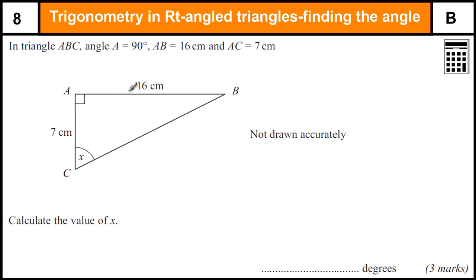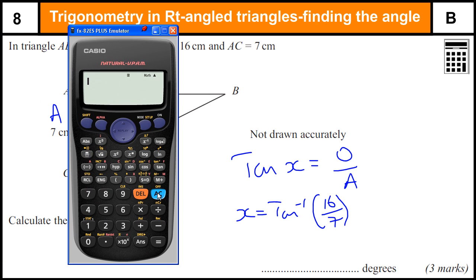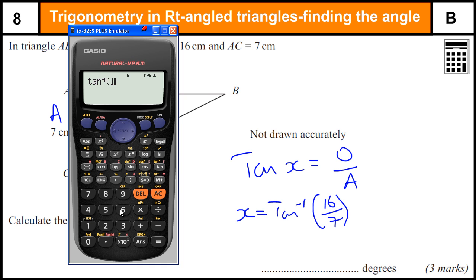Next we've got a triangle. This is our hypotenuse, this is our opposite side, this is our adjacent side. Opposite over adjacent is tan, so tan of the angle x equals opposite over adjacent. That means we need to do tan to the minus 1 of opposite which is 16 over the adjacent which is 7. So inverse tan of 16 over 7, close the bracket, and we get 66.4 degrees.